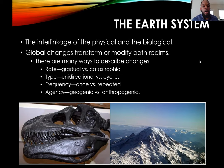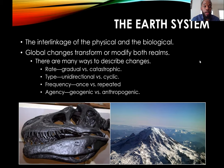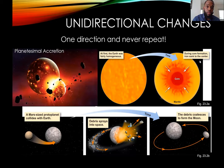There are a couple of categories we're going to talk about today: the rate — gradual versus catastrophic changes; unidirectional versus cyclic types of changes; frequency — does it happen once or is it repeated; and also the agencies — geogenic, which is the natural form like the rock cycle and plate tectonics, versus anthropogenic, which we'll talk about later in the next lecture.